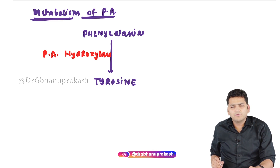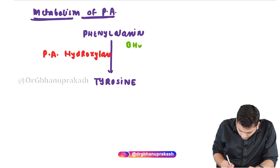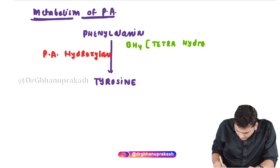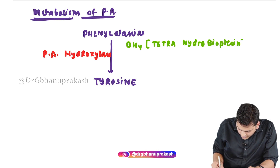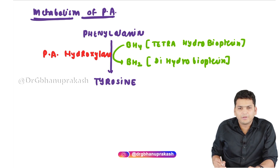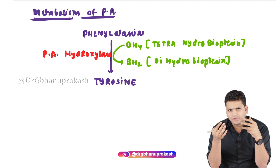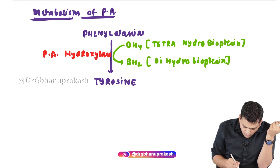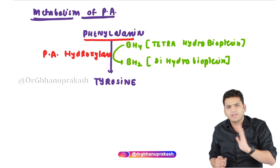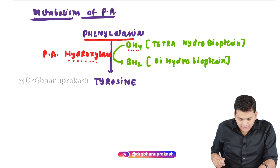In the same reaction we require a coenzyme called BH4, also referred to as tetrahydrobiopterin. BH4 converts into BH2, referred to as dihydrobiopterin. To run this reaction repeatedly with multiple molecules of phenylalanine, we need multiple molecules of phenylalanine hydroxylase and multiple molecules of BH4.